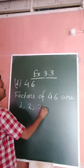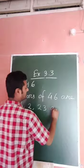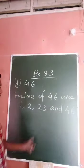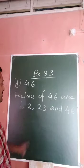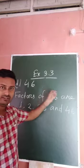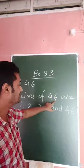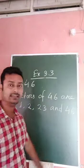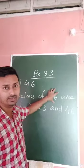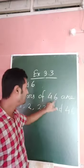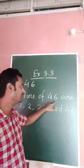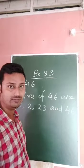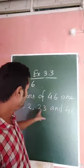23 times 2 is 46, so 23 is a factor. Every number is divisible by 1. The number is divisible by 2 because the last digit is even. Now 6 plus 4 is 10, which is not divisible by 3, so the number is not divisible by 3. Also not divisible by 4, and not divisible by 5 because the last digit is neither 0 nor 5.